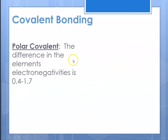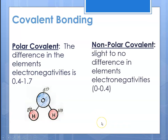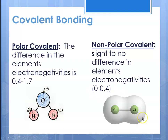With covalent bonding, a polar covalent bond results if the electronegativity difference is between 0.4 and 1.7. We show that with delta negative and delta positive — for example, oxygen has more electronegativity, so electrons spend more time on oxygen and less time on hydrogen, making the hydrogen side slightly positive and the oxygen side slightly negative. A nonpolar covalent bond has very little difference in electronegativities, between 0 and 0.4, like chlorine with itself, where electrons are equally shared.